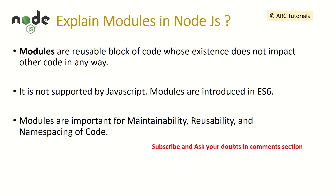Explain modules in NodeJS. Modules are reusable blocks of code whose existence does not impact any other code. Modules are introduced from ES6 onwards — that is when we use module.exports or classes. You can think of a module as a reusable, common set of code which does not get impacted but can be imported and used again. Modules are very important for writing reusable code, especially when working with a distributed team. This is an important question asked in almost all interviews to assess your understanding.